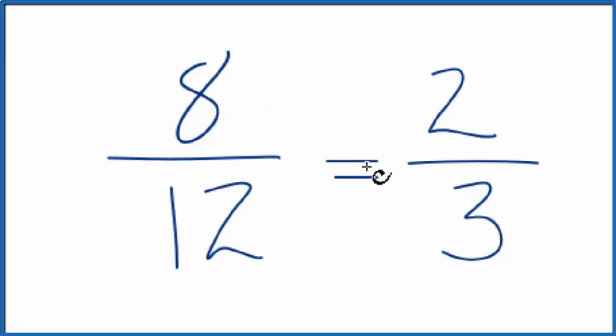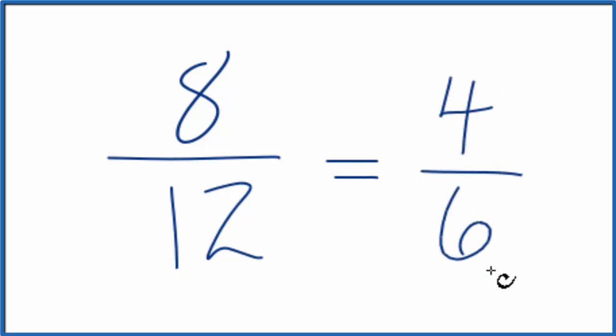There is one other way you could do this. You could take and divide 8 and 12 by 2. 8 divided by 2, that would give us 4. 12 divided by 2, that would give us 6.